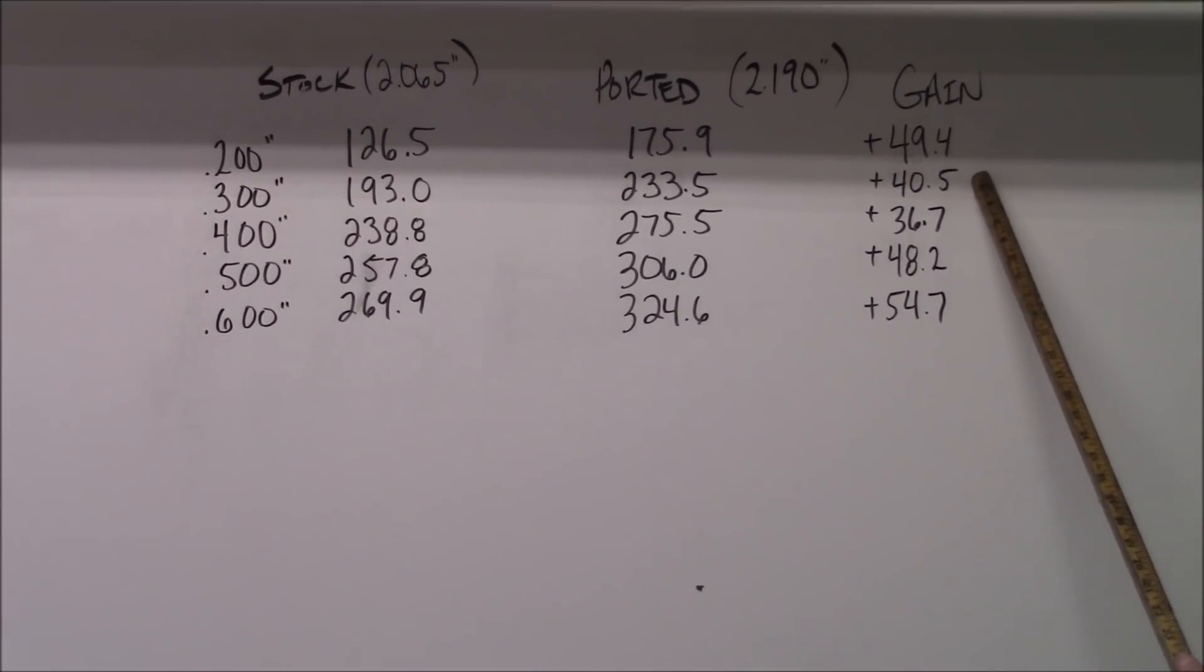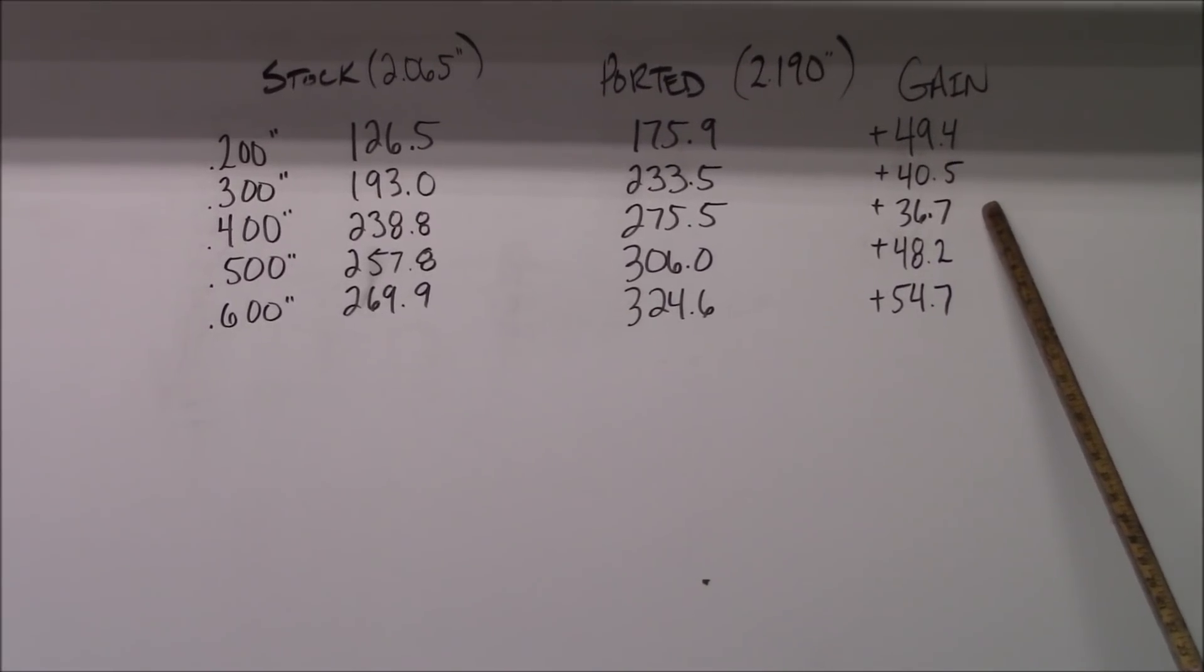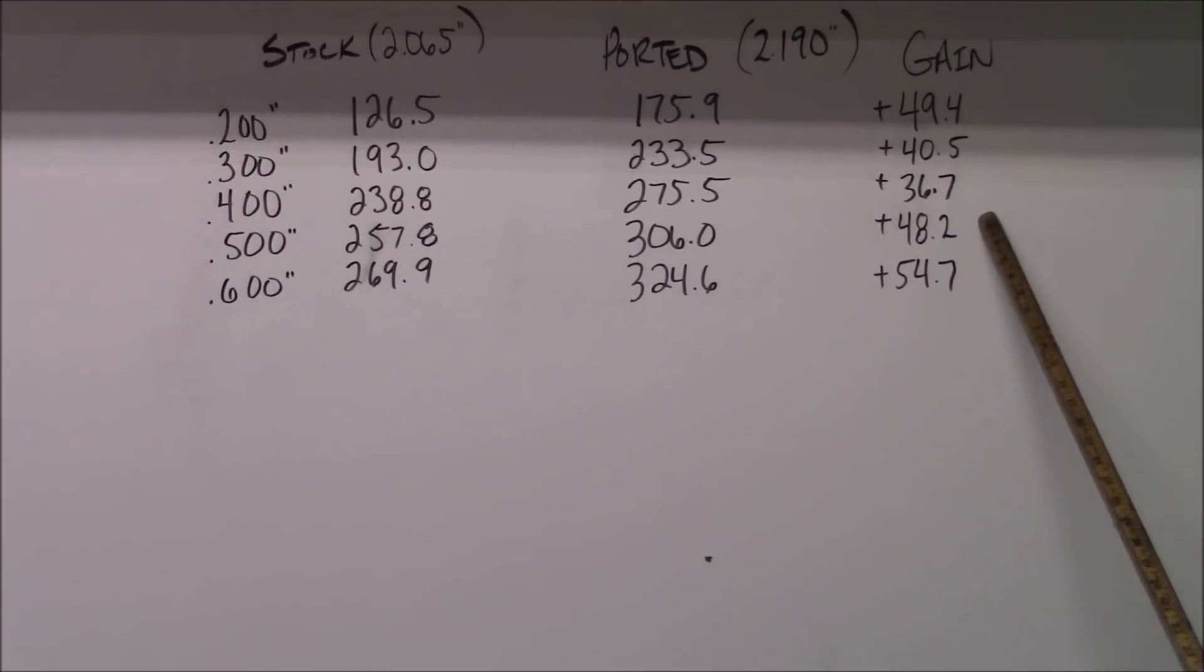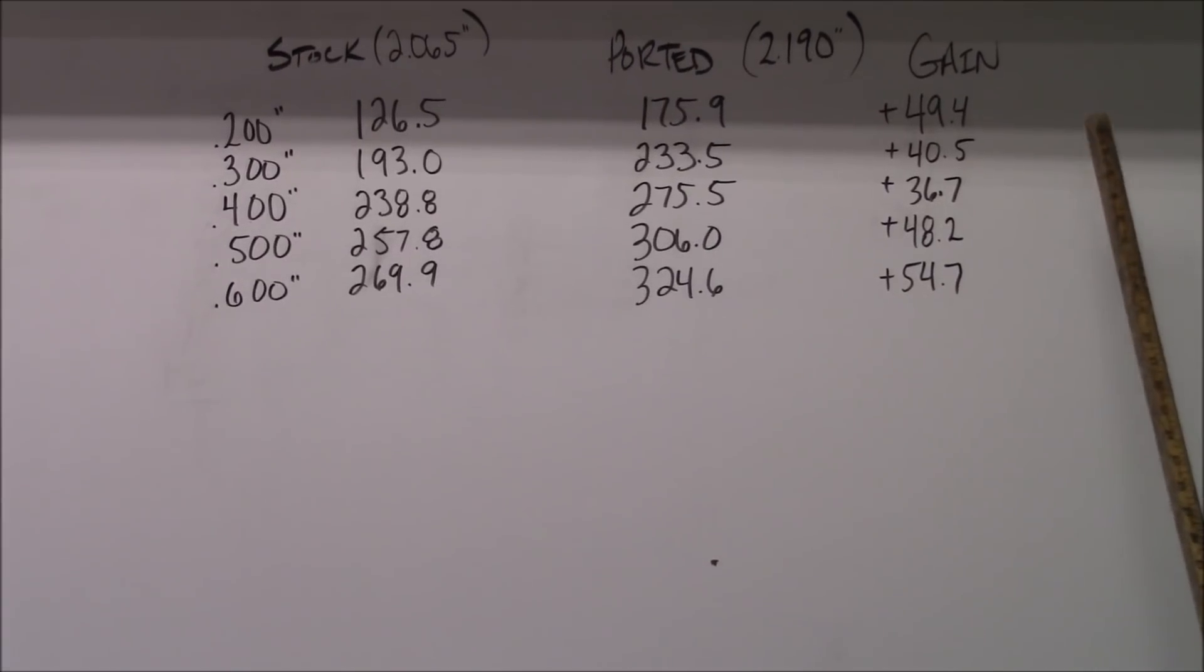At 300, it was 40.5 up. At 400 lift, it was 36.7 up. At 500, we were 48.2 up. At 600, we were 54.7 up.